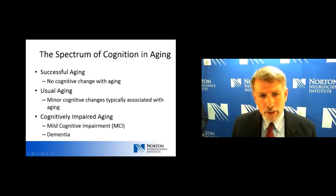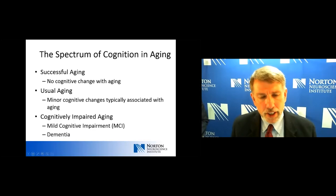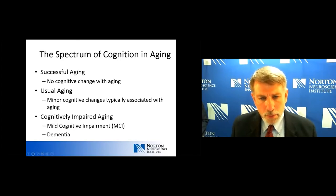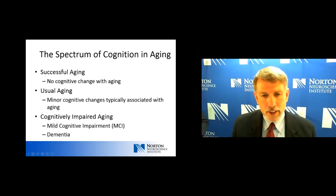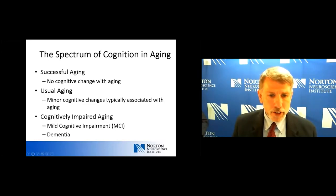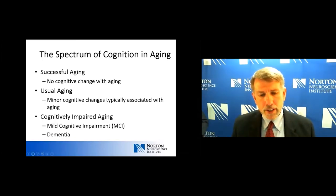In usual aging, we do see some fairly minor, often subtle cognitive changes with age. Sometimes we refer to this as changes in our fluid intelligence — my learning of new items may not be quite as efficient, it may take me a little longer to recall items, my problem solving may be a little slower. At the same time, crystallized intelligence — items we have already learned — should stay intact, and wisdom and judgment can even improve with age. And then finally we have cognitively impaired aging, which is where we get into conditions such as mild cognitive impairment or dementia.